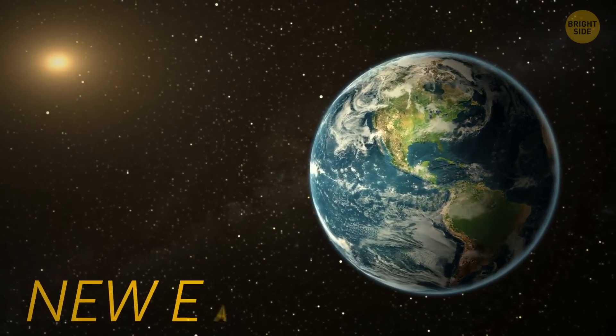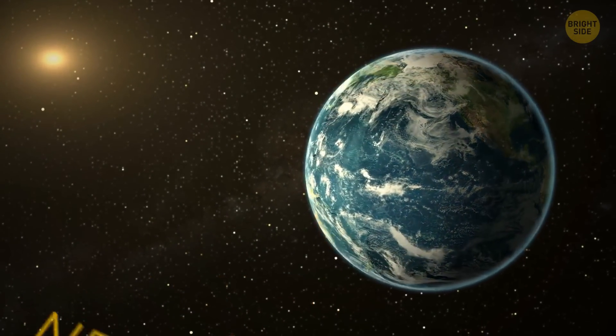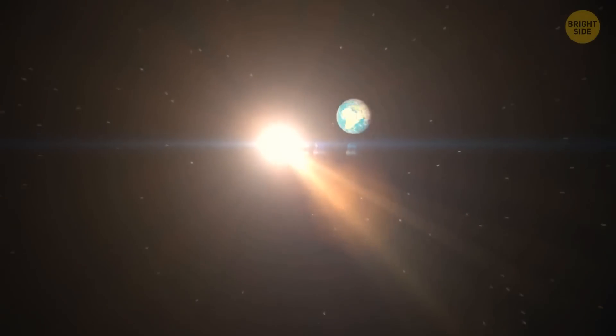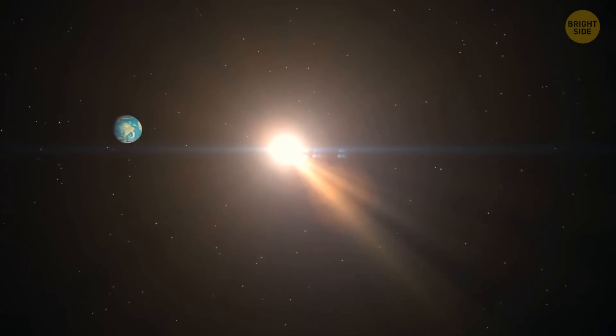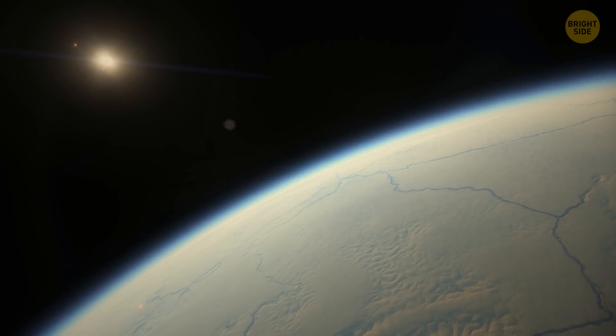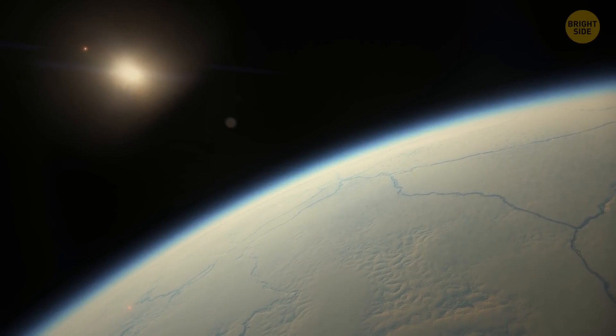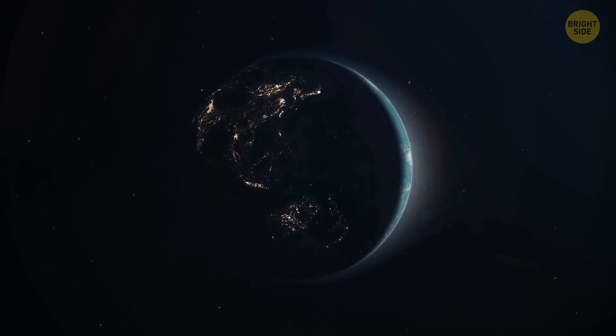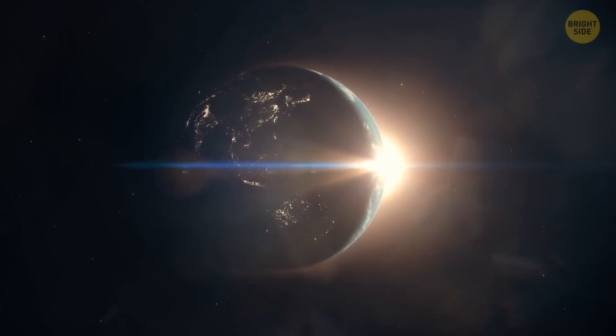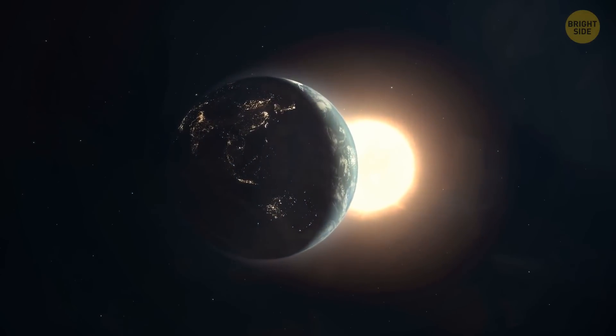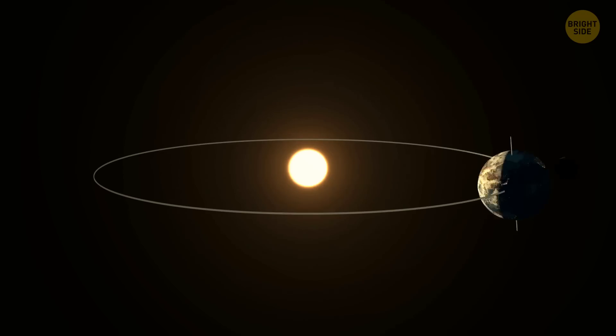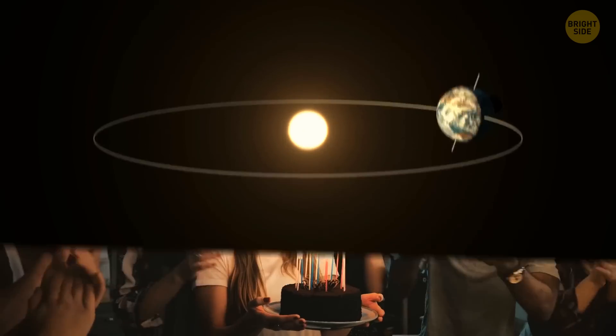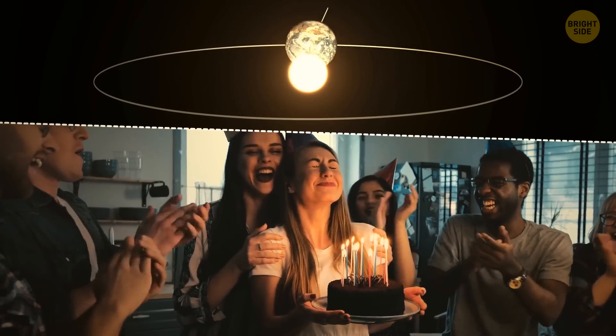First of all, the orbit. The New Earth must be about 25 times closer to its star than Proxima B is. Otherwise, it would be unimaginably cold. Let's move the planet a little closer. Excellent. The day still lasts 24 hours, but our orbital period is very high. Proxima B revolves around its star in 11 days. But we'll make it in just 8. Hey, a birthday party every week? Sign me up.